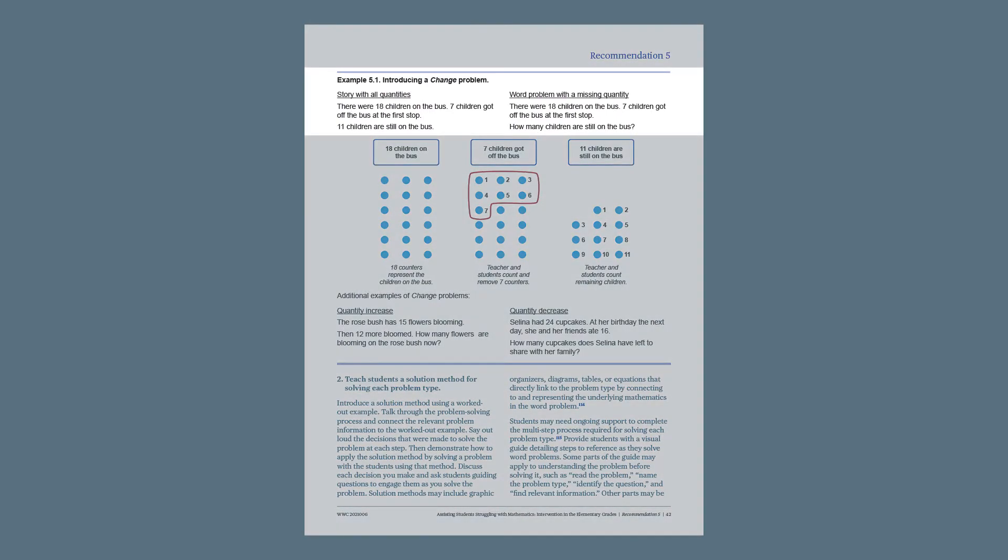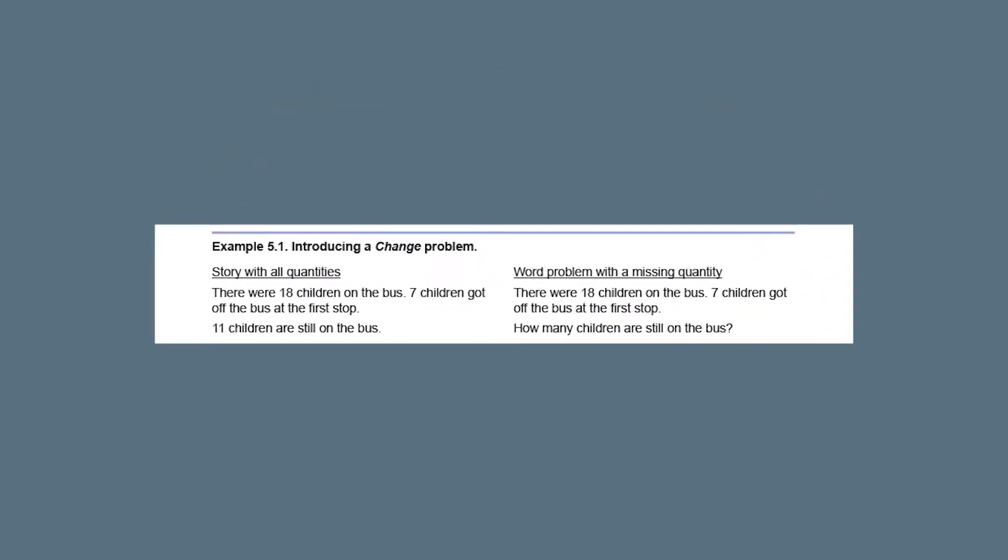The Practice Guide outlines five action steps teachers should use to carry out this recommendation. The first step is to teach students to identify word problem types that include the same action or event. The teacher introduces each problem type one at a time, introducing each new problem type with a story that includes all the quantities, so there is no missing information for the student to find. This helps students think about what the problem type event means and what the quantities mean.